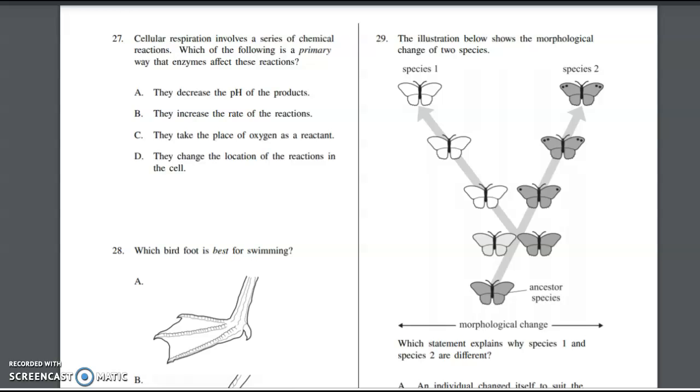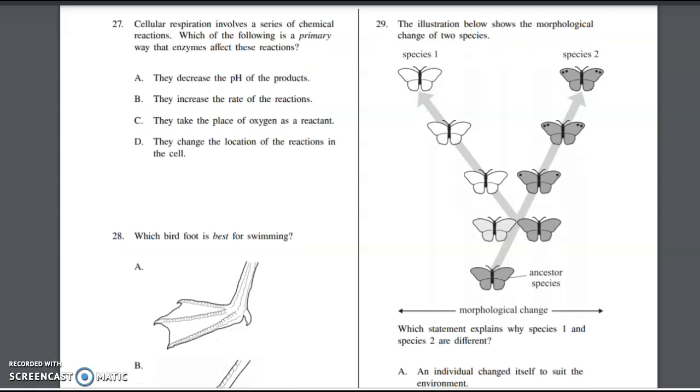Number 29 says the illustration below shows the morphological changes of two species. We started out with this ancestor species and then we branched off. We got a little bit lighter there and a little bit darker, and as it went up through here, got lighter and lighter to make species one. Species two evolved to get darker spots on it. Which statement explains why species one and species two are different? There's something in their environment that was different that caused organisms with a certain trait to survive in that area.